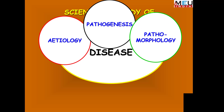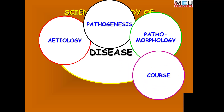Then there is pathomorphology. As a result of these changes, there are alterations in the gross and microscopic structure of the particular organ. Gradually the disease follows a course in which certain changes take place over a period of time — this could be short term, around a month, or long term, spreading over years.